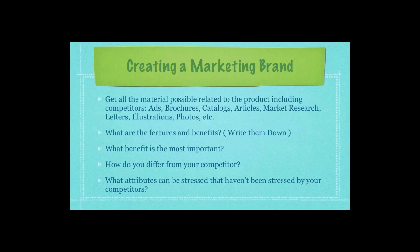Then sit down and first write out the features for the product or service that you sell. After writing down the features, next to each one write down the benefits. For example, a feature of a car might be that it gets 36 miles to a gallon — the benefit is you save money on fuel. Then ask what benefit is the most important, and how do you differ from your competitors? What attributes can be stressed that have not been stressed by your competitors? You wouldn't be able to answer these questions unless you had all of your competitors' marketing material in front of you.